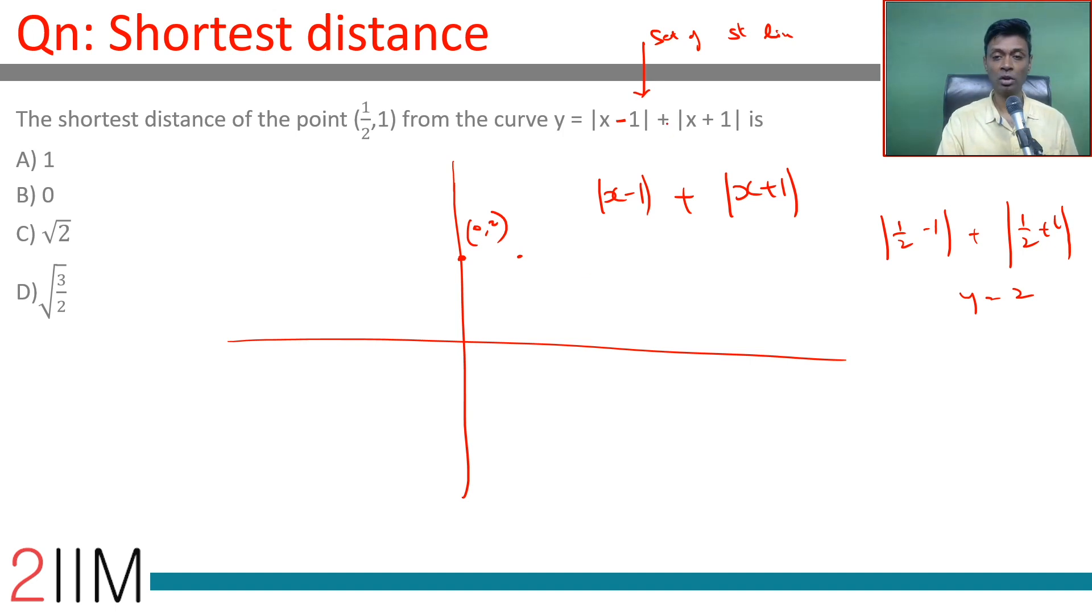x = -1 will be a point here as well. And x = 1/2: |1/2 - 1| is 1/2, plus 3/2 gives y = 2. So (-1/2, 2) is also a point.